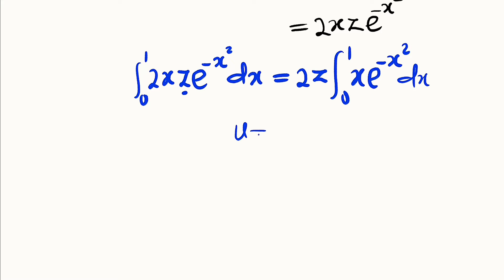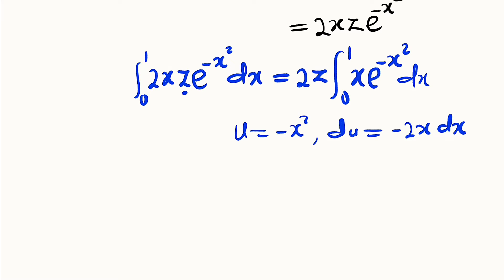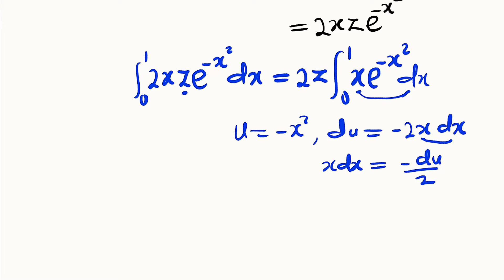Let u = -x², so that du = -2x dx. In our main function we have x dx, so we make x dx the subject: x dx = -du/2.